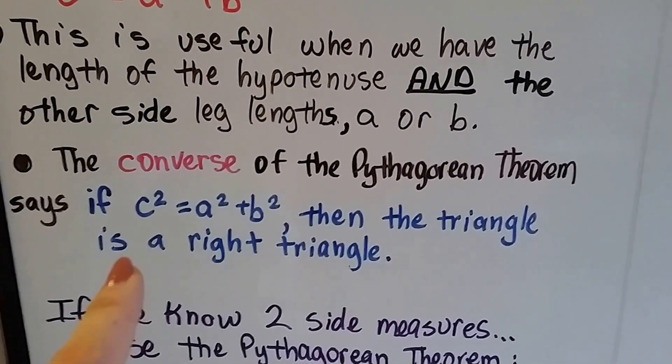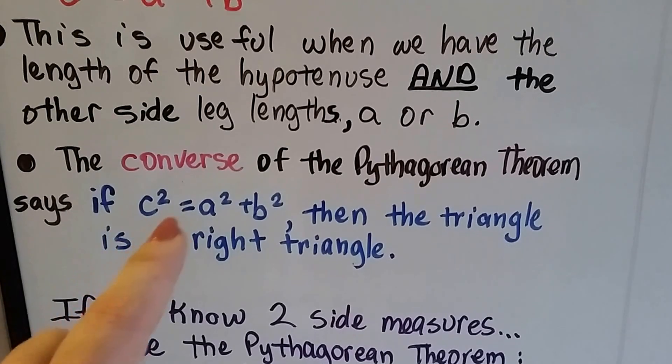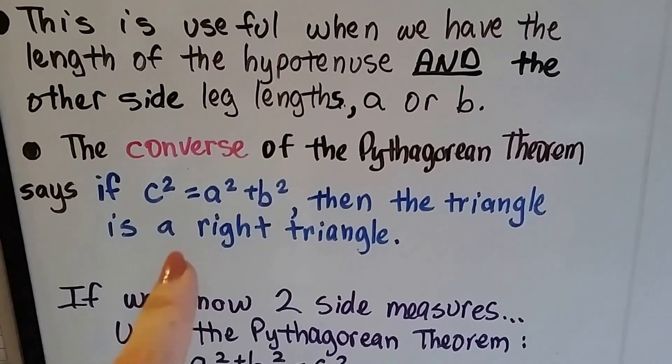So the converse of the Pythagorean theorem: if c squared equals a squared plus b squared, then the triangle is a right triangle.